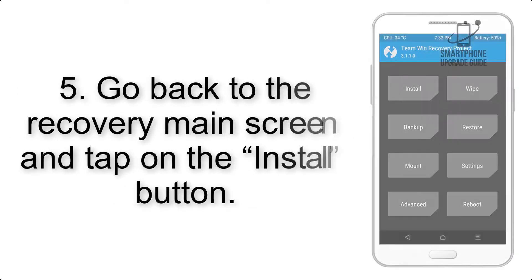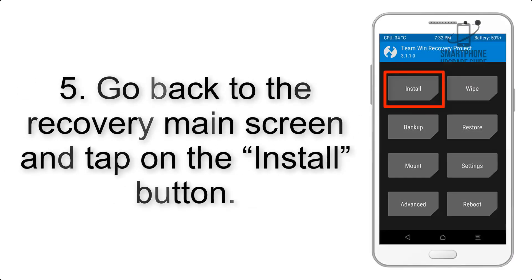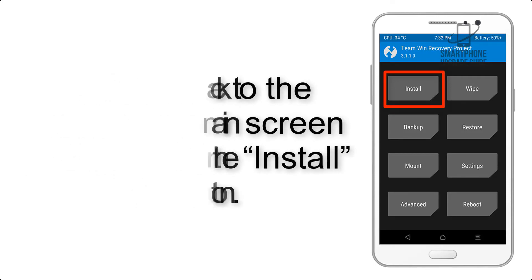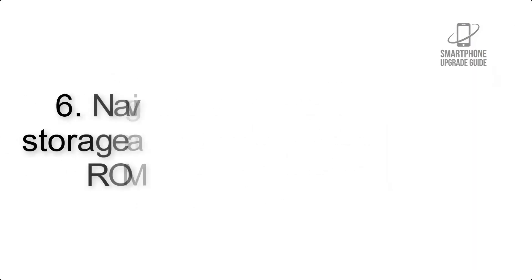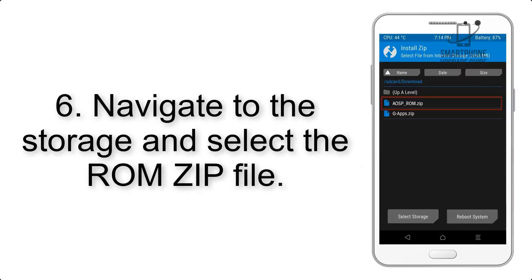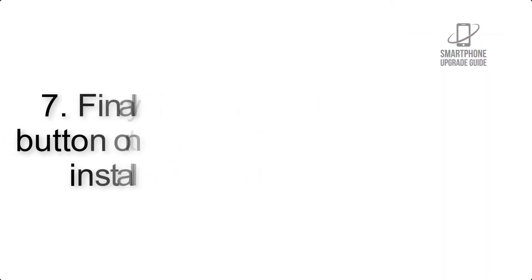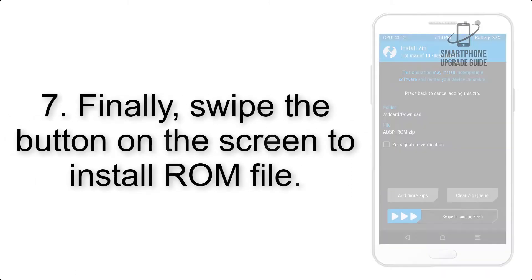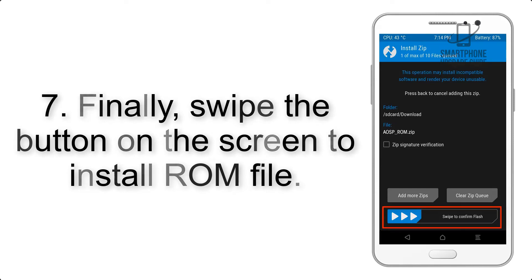Step 4: Swipe the button to wipe the device. Step 5: Go back to the recovery main screen and tap on the Install button. Step 6: Navigate to the storage and select the ROM zip file.